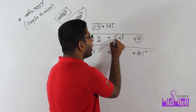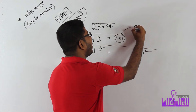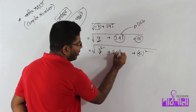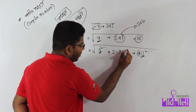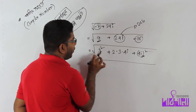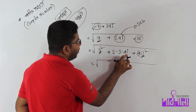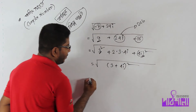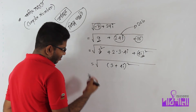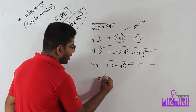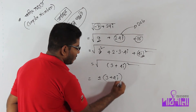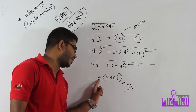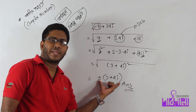Now look at 24i. I will always write in 2ab format. A is 3, b is 4i. Write root over a square plus 2ab plus b square, which equals a plus b whole square. Taking the square root gives plus or minus 3 plus 4i. This is the answer.